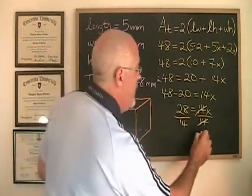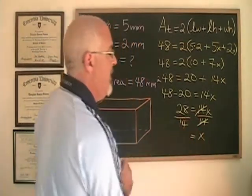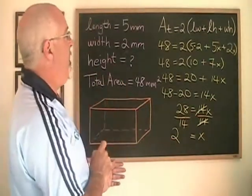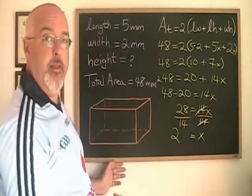Our x is isolated. 28 divided by 14 is 2. And we have found our missing height. It happens to be the same as the width this time.